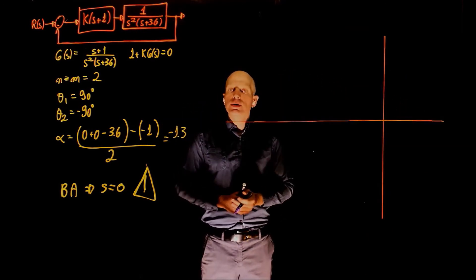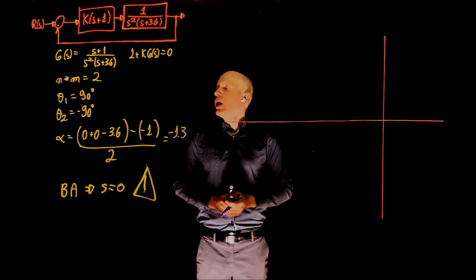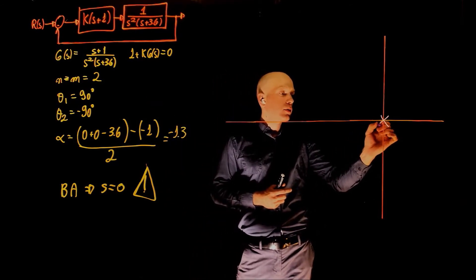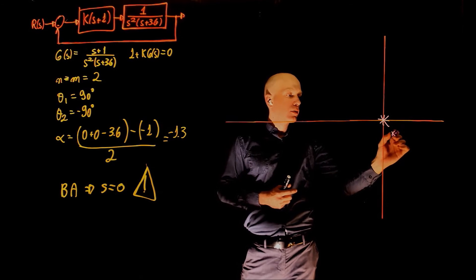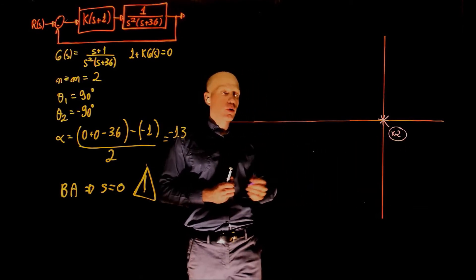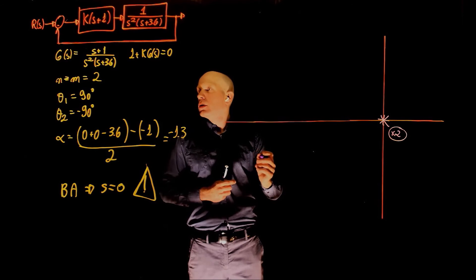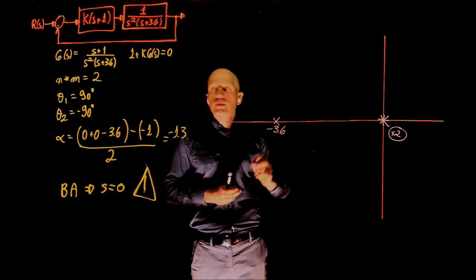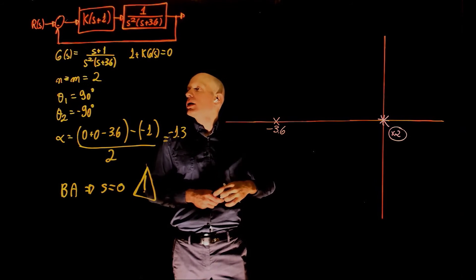Now let's locate the poles and zeros on the s-plane. We have two poles at 0, that's because of the s-squared. We have a pole at negative 3.6, and we have a zero at negative 1.